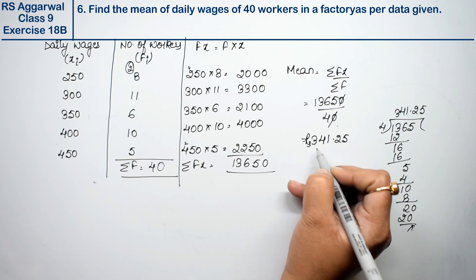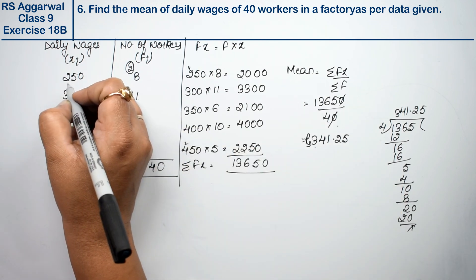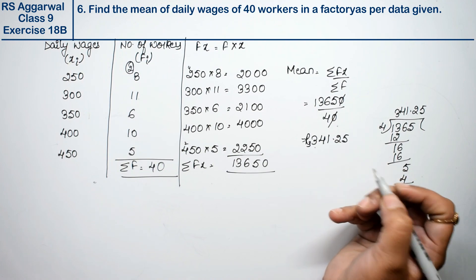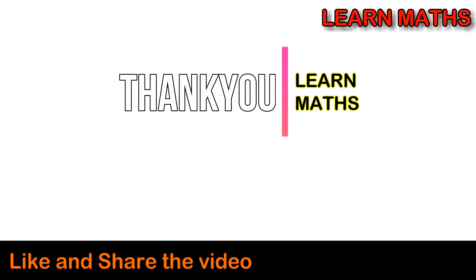341.25. But where will it come? In rupees, because we had to find wages and mean wages of 40 workers. So this is the answer. Thank you. If you understand the step by step solution of this video, please subscribe my channel on Maths and share it with your friends. Thank you.